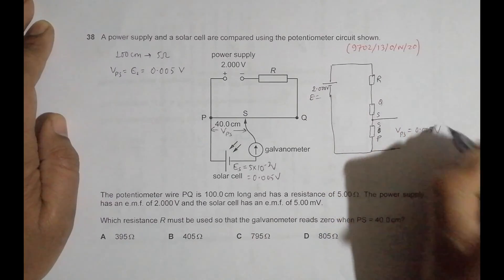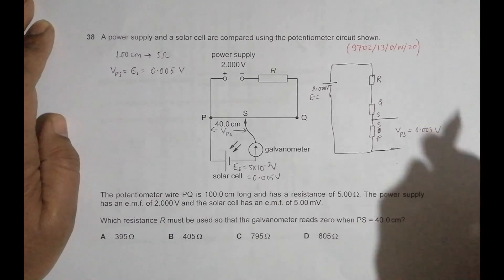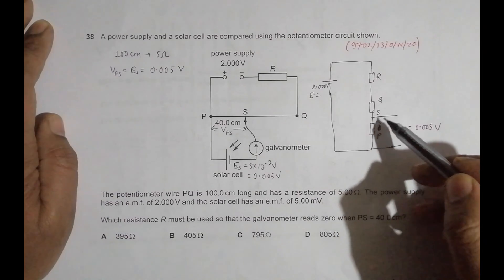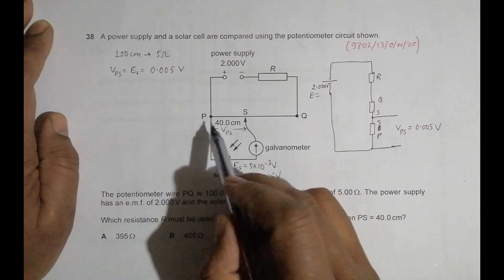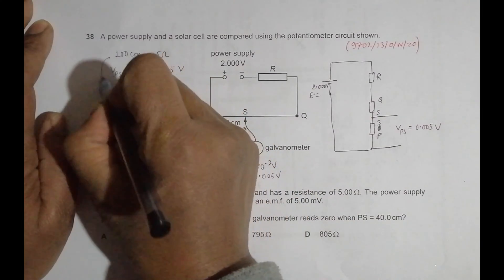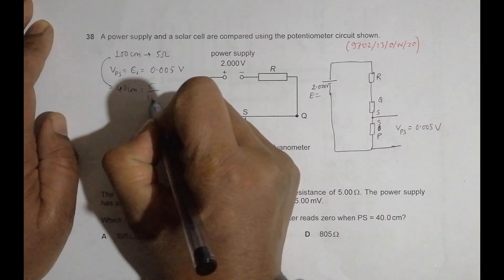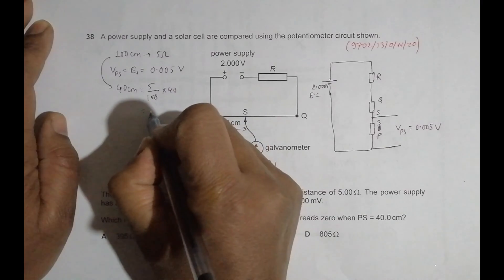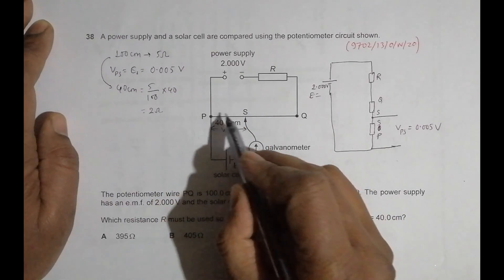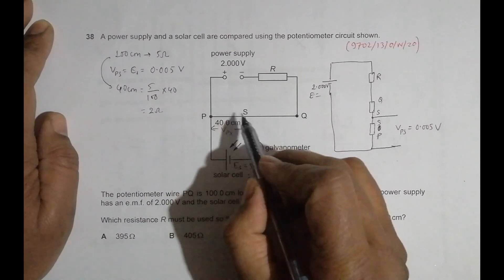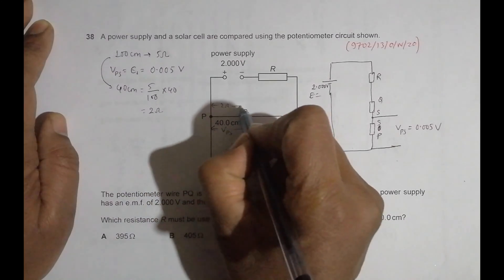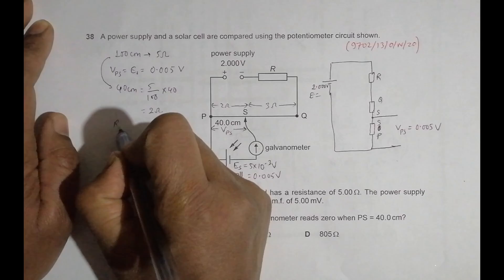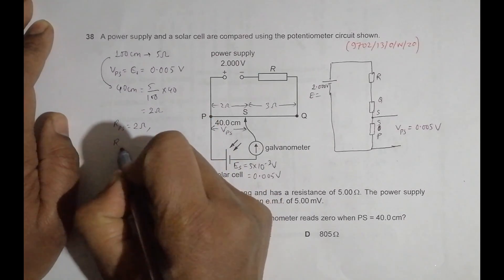We can apply the voltage divider theorem here. First, let's find the resistances. Since 100 cm corresponds to 5 ohm, then 40 cm corresponds to (5/100) × 40 = 2 ohm. So R_SP equals 2 ohm, and the remaining R_SQ equals 3 ohm, because the total resistance of the wire is 5 ohm.